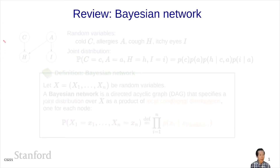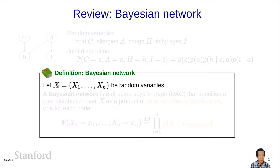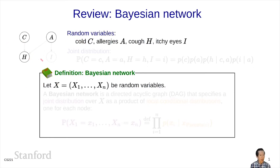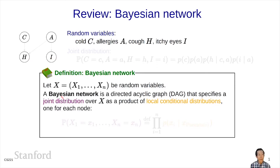Recall that the Bayesian network consists of a set of random variables — for example, cold, allergies, cough, and itchy eye. The Bayesian network defines a directed acyclic graph over these random variables that captures the qualitative dependencies between them. For example, cough is caused by cold or allergies, and itchy eyes is caused by allergies alone.